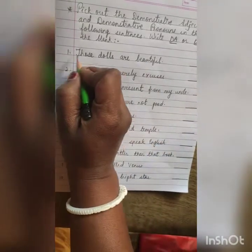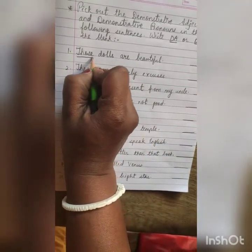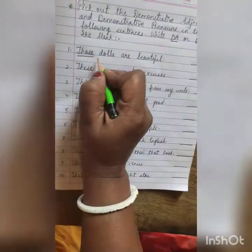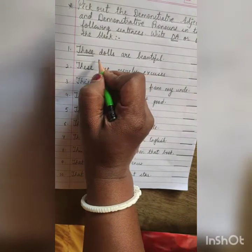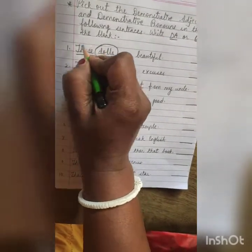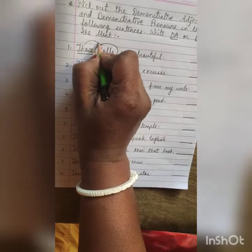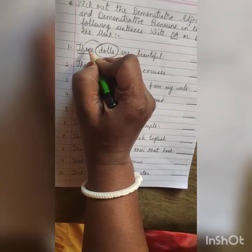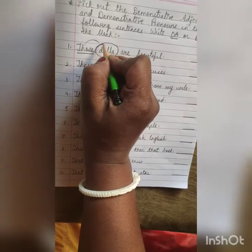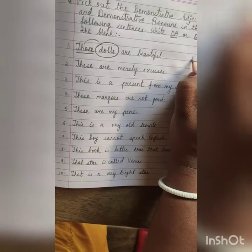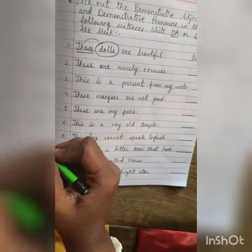We know 'those' is a demonstrative, but we need to find the noun first. The noun is 'dolls.' Those is right next to 'dolls' — it is nearer to the noun. So adjectives are next to the noun, which means here 'those' is a demonstrative adjective. We write DA.